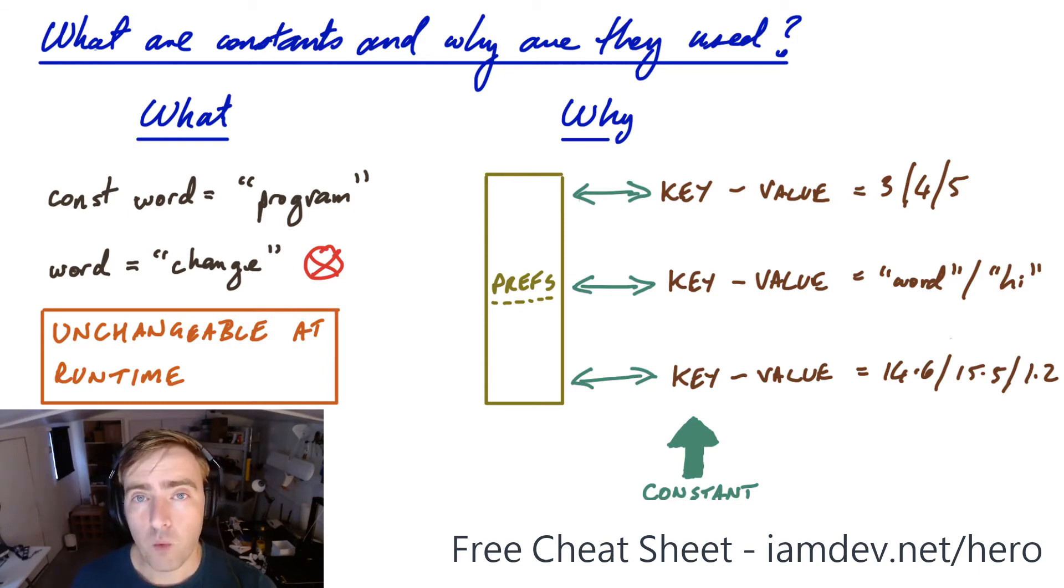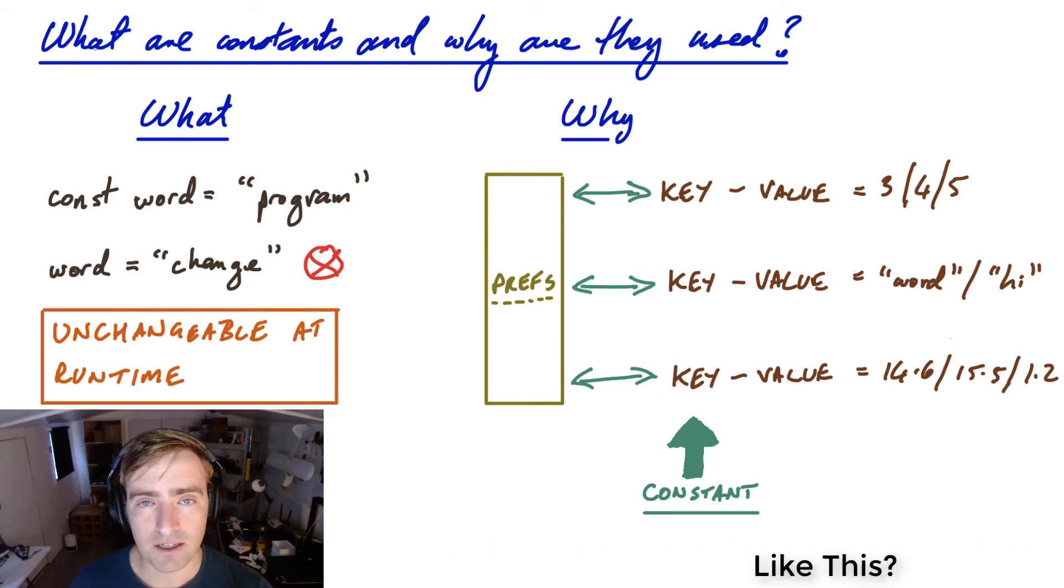Another example might be a web address that links to a server that you're pulling data from for your application. The address is never going to change. Well, it shouldn't ever change. It's top advice from a pro developer that's done it all wrong before. Never change the endpoints, your API endpoints in your web addresses. So that's another example of a constant.